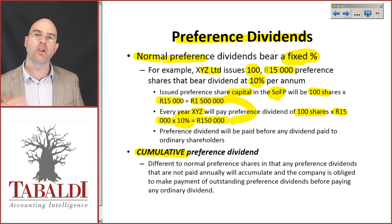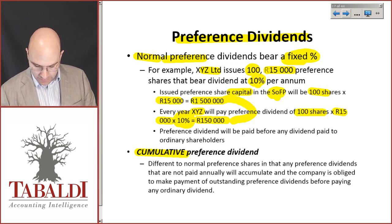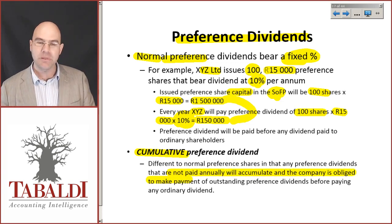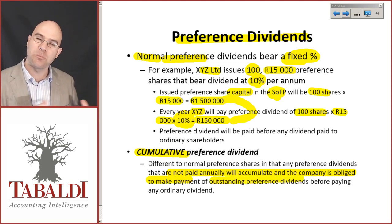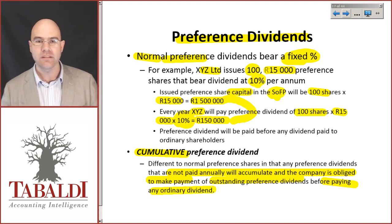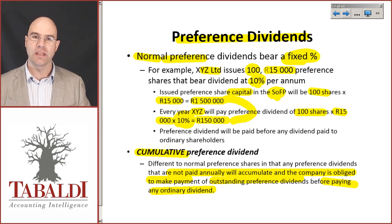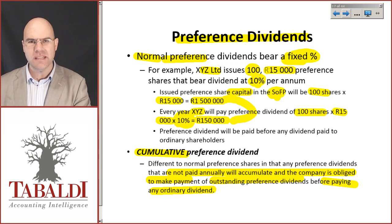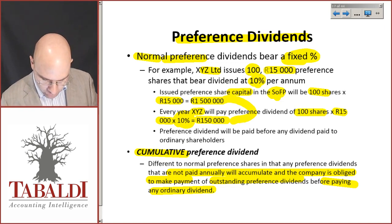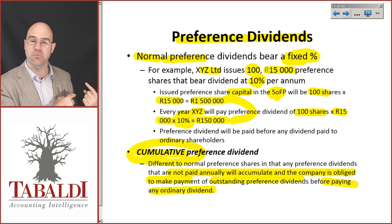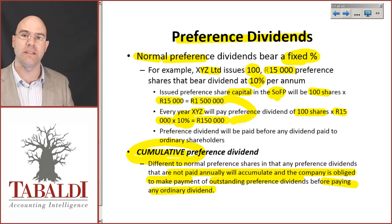There could be cumulative preference shares, which basically say that any preference dividends not paid annually will accumulate, and the company is obliged to make good any previously outstanding preference dividends before paying any ordinary dividends. Normal preference shares: in that year, first pay preference share dividends, then you can pay ordinary shareholders. But if there's not enough money or no profits to pay preference shares, it's almost like a reset button for the next year. With cumulative preference shares, in the next year you must first catch up the current and previous year's preference dividends before paying any ordinary dividends.